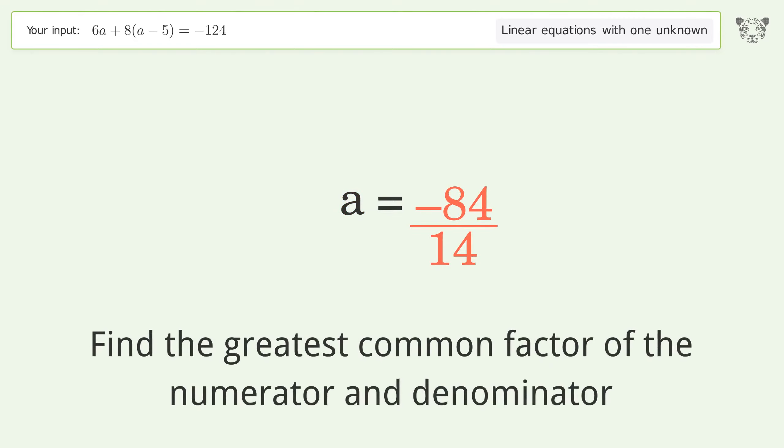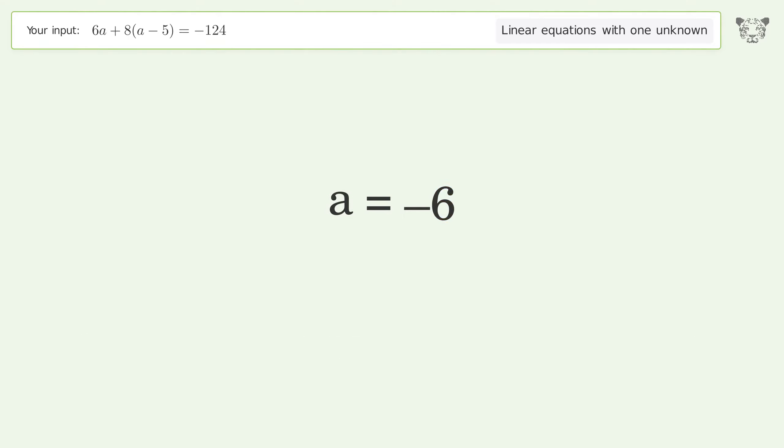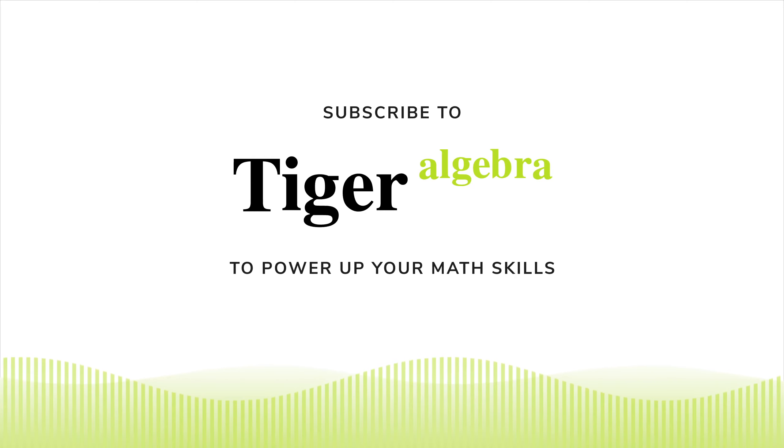Find the greatest common factor of the numerator and denominator. Factor out and cancel the greatest common factor. The final result is a equals negative 6.